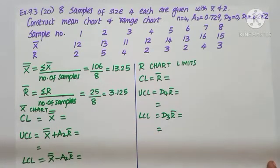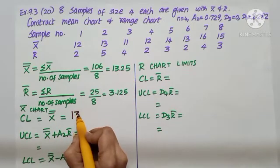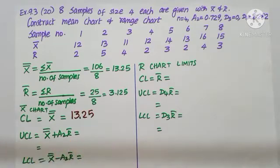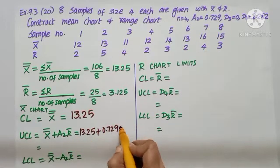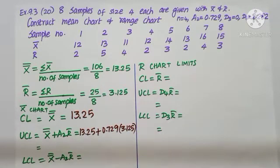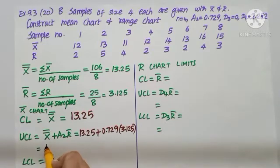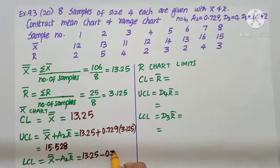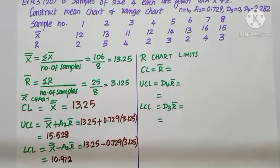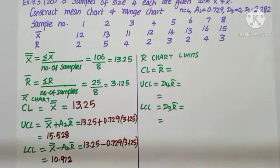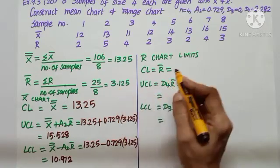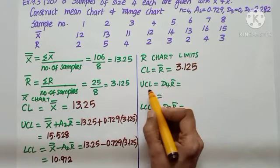Dividing by 8, r-bar equals 3.125. For the x-bar chart control limits: CL equals x-double-bar, that is 13.25. UCL equals x-double-bar plus A2 into r-bar: 13.25 plus 0.729 into 3.125, giving us 15.528. LCL equals 13.25 minus 0.729 into 3.125, giving us 10.972.